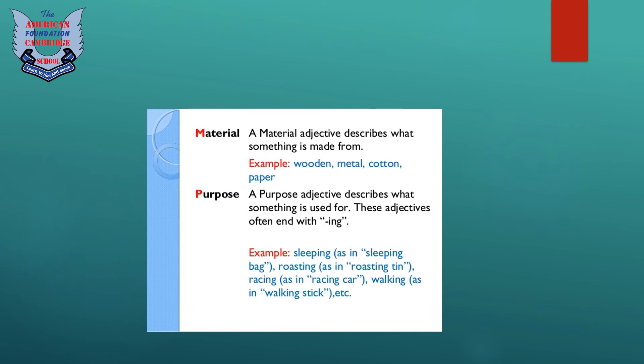Likewise, we are talking about material. A material adjective describes what something is made from. Examples: wooden, metal, cotton, paper, etc.